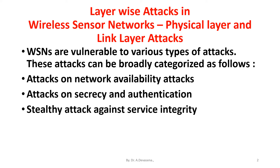The third category comes under stealthy attacks against service integrity. In the stealthy attack, the goal of the attacker is to make the network accept a false data value. For example, an attacker compromises a sensor node and injects a false data value through that sensor node. In this attack, keeping the sensor network available for its intended use is essential.